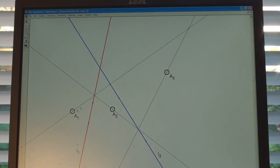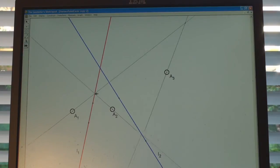That gives a correspondence between the line that we started with through A1 and the line that we end up with through A3, between this line and this line.